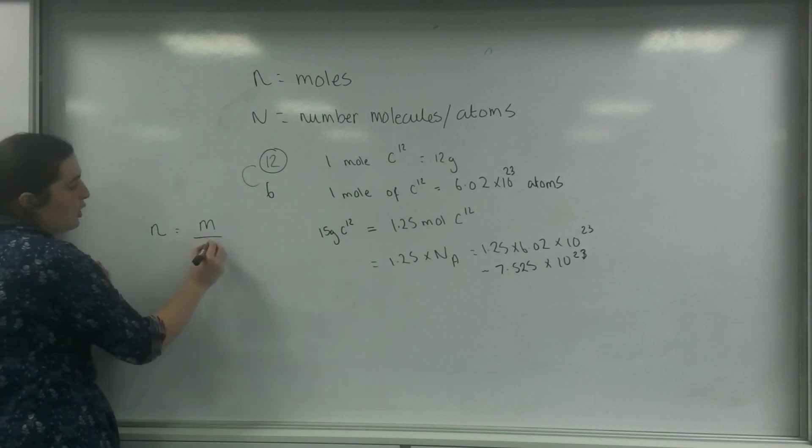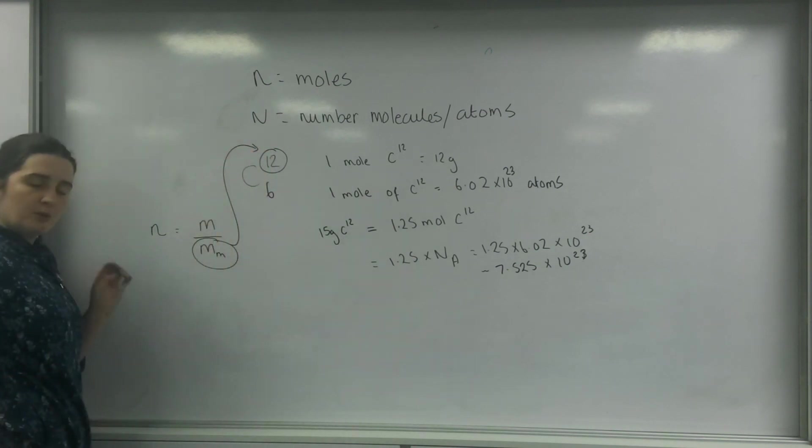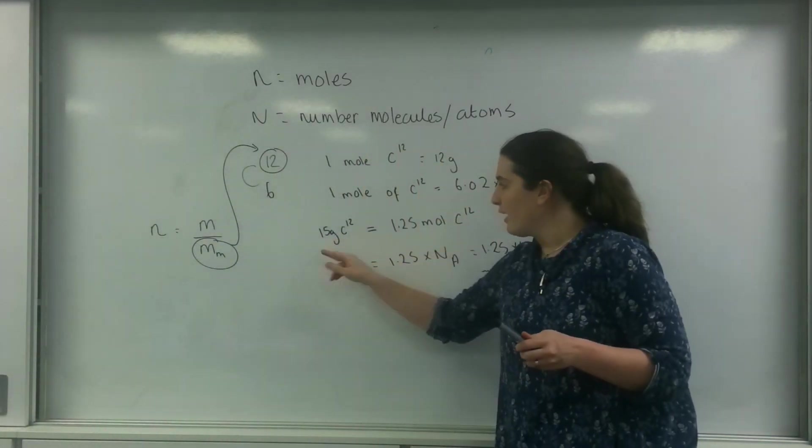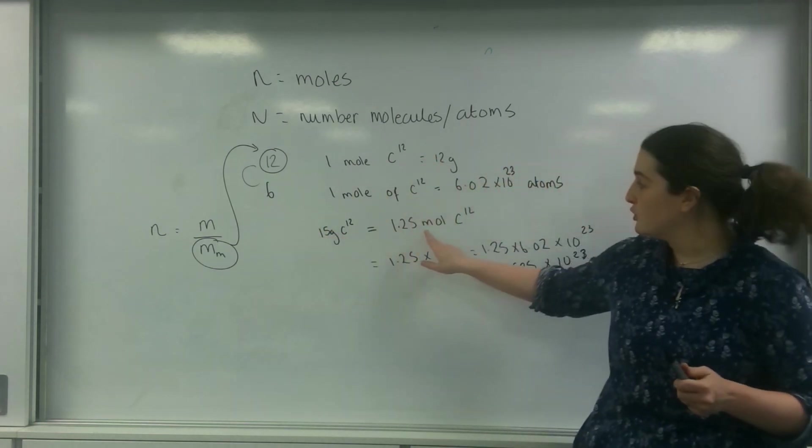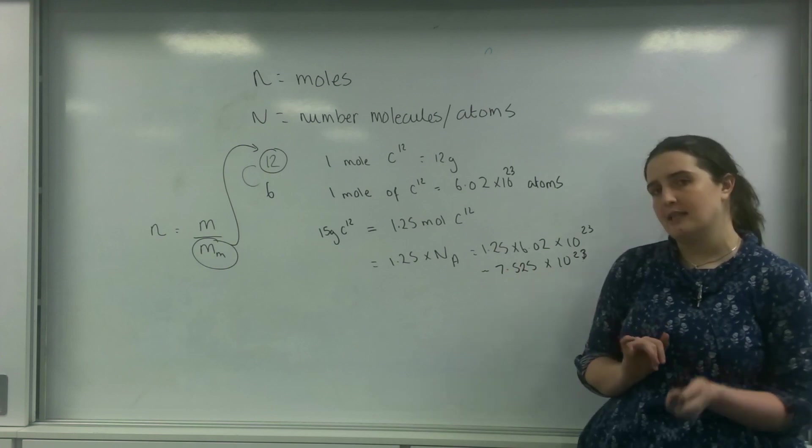And this molar mass here is that number there, is the atomic mass number. So exactly what I did there. I had 15 grams. So 15 divided by 12 was 1.25 moles. And then I times that by Avogadro's constant to get the number of atoms.